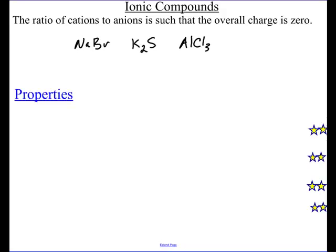The ratio of anions and cations is such that the overall charge is 0. And what I mean by that is if I have this ion, let's just say it has a positive charge, and I have this negative ion, and it's got a minus 2 charge, if I were to put those two together, would that equal 0? It wouldn't equal 0.